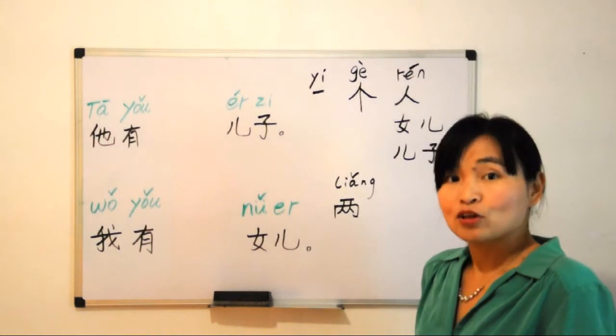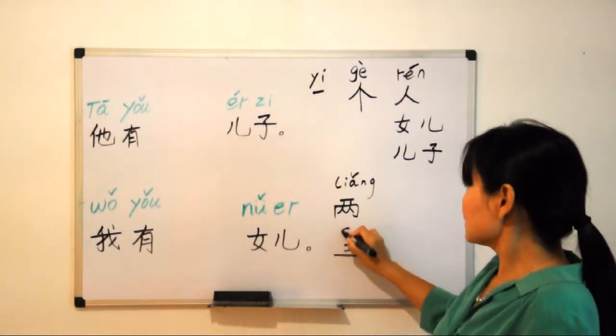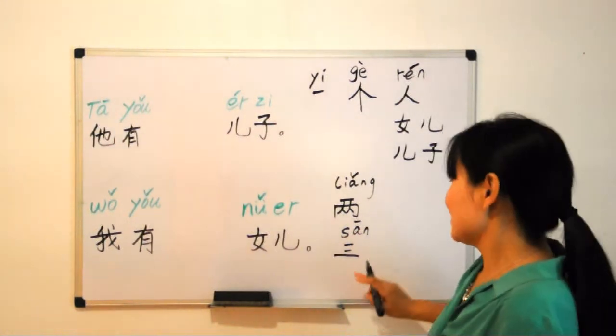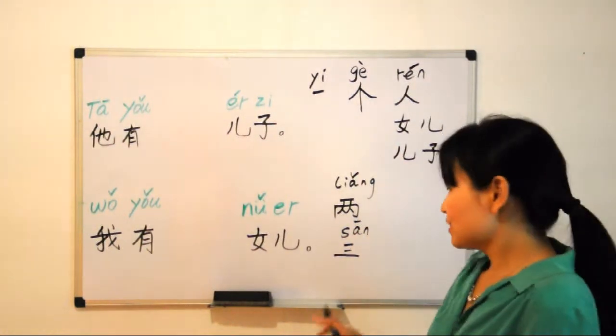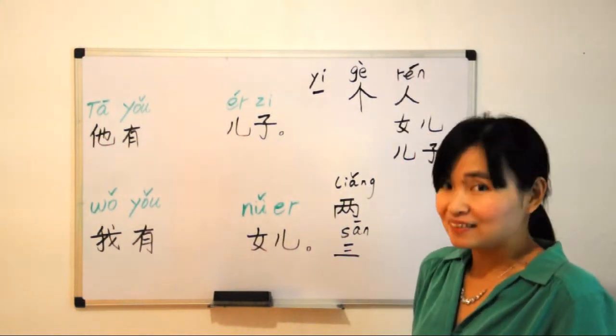How about three persons? Three, remember? 三 (sān), right? Three persons: 三个人 (sān gè rén). Three daughters: 三个女儿 (sān gè nǚ'ér). Three sons: 三个儿子 (sān gè érzi).